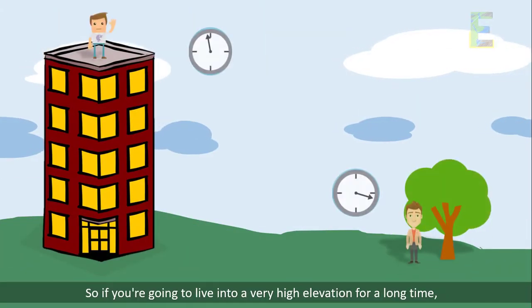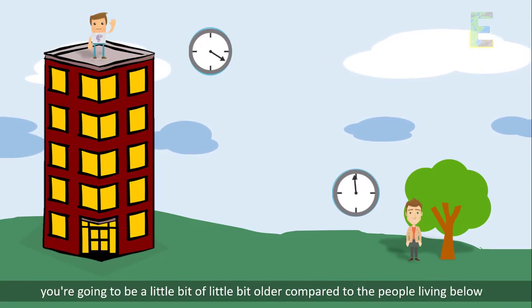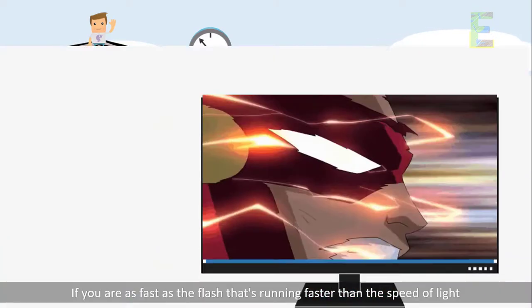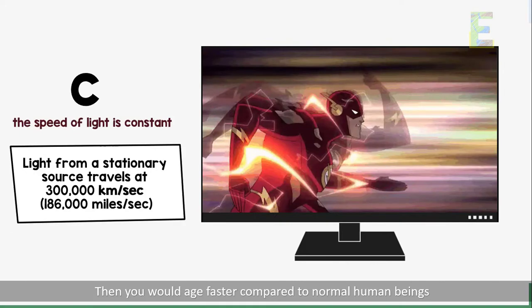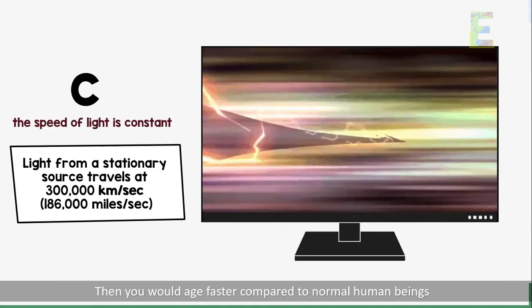So, if you are going to live at a very high elevation for a long time, you are going to be a little bit older compared to the people living below. If you are as fast as the Flash that's running faster than the speed of light, then you would age faster compared to normal human beings.